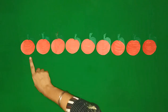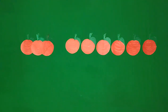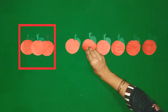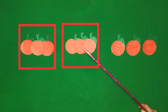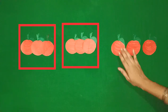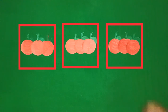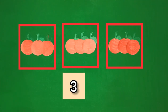Let's start. 1, 2, 3. There is 1 group of 3 apples. 1, 2, 3. There is another group of 3 apples. 1, 2, 3. There is 1 more group of 3 apples. Let's count — how many groups are there? 1, 2, 3. There are 3 groups of 3 apples.